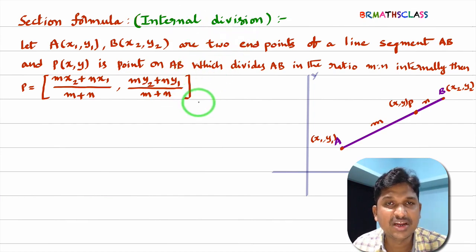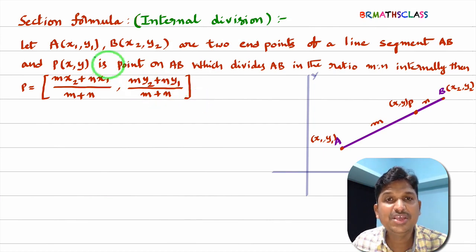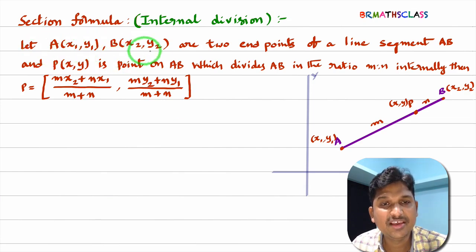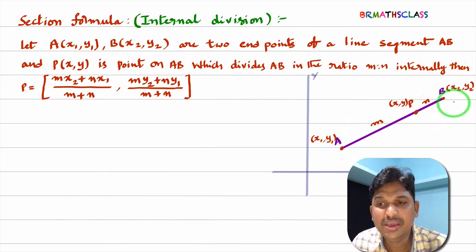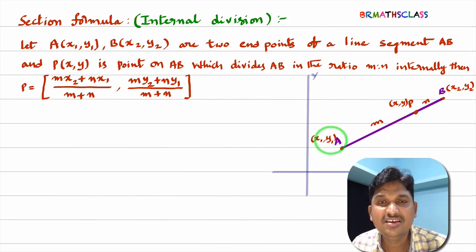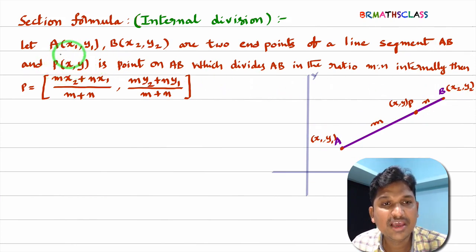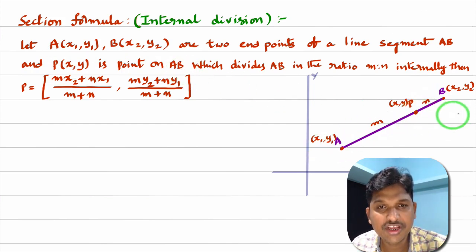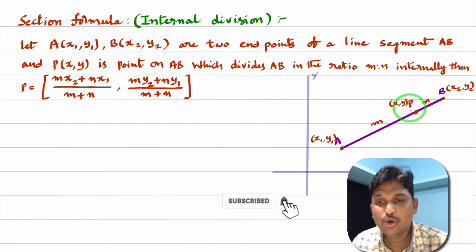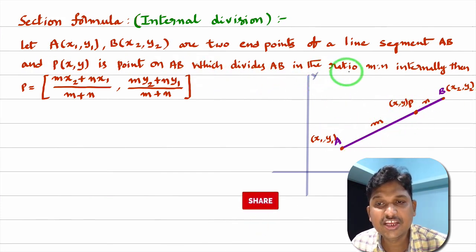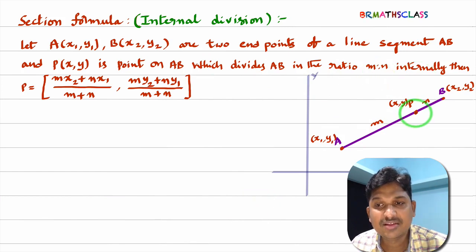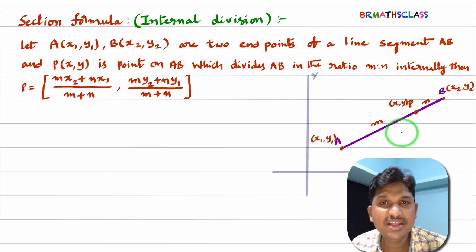First we will try to understand what is section formula and then we will derive this result. A(x1, y1) and B(x2, y2) are two endpoints of a line segment AB. P(x, y) is a point on AB which divides AB in the ratio M:N internally. As point P is in between A and B, we say this is internal division.